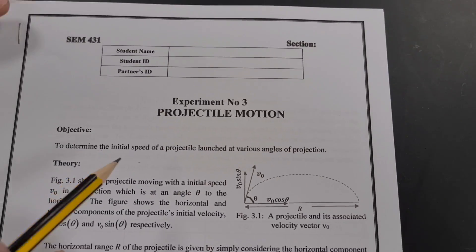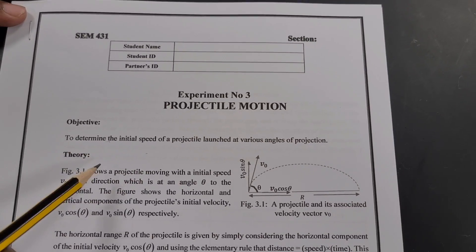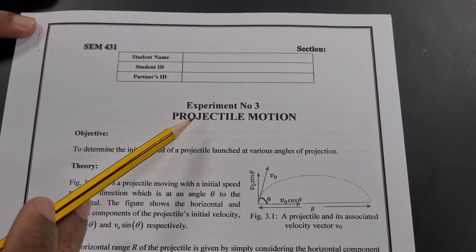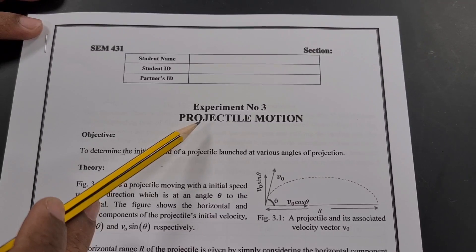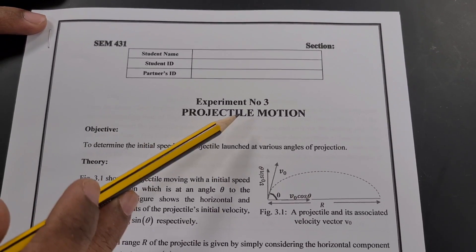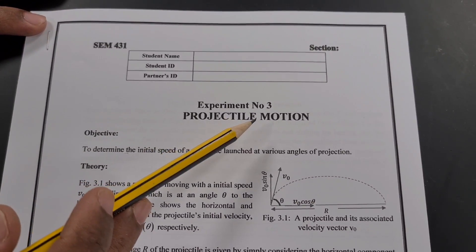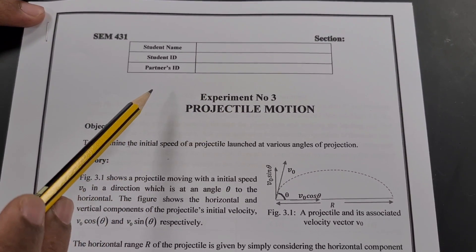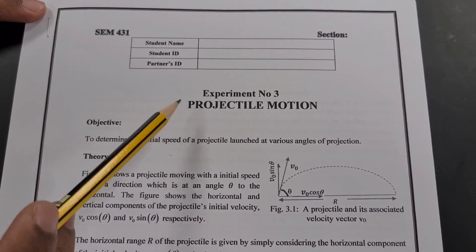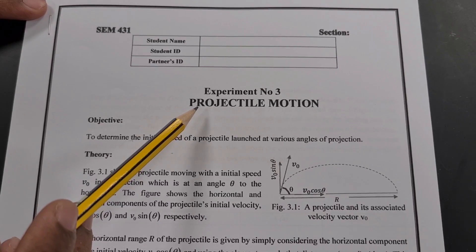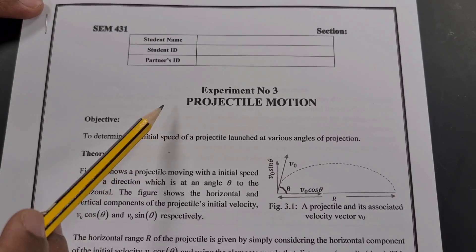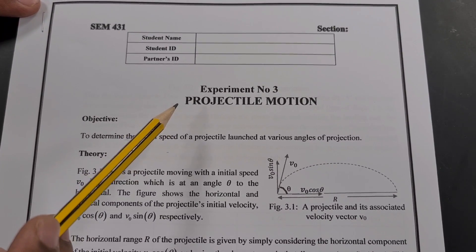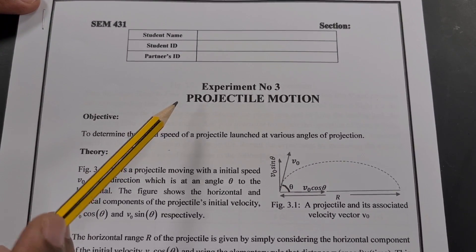Today I am going to explain experiment 3 in Physics 1: projectile motion. We already studied projectile motion in chapter 4. This is an example of object movement in two dimensions.